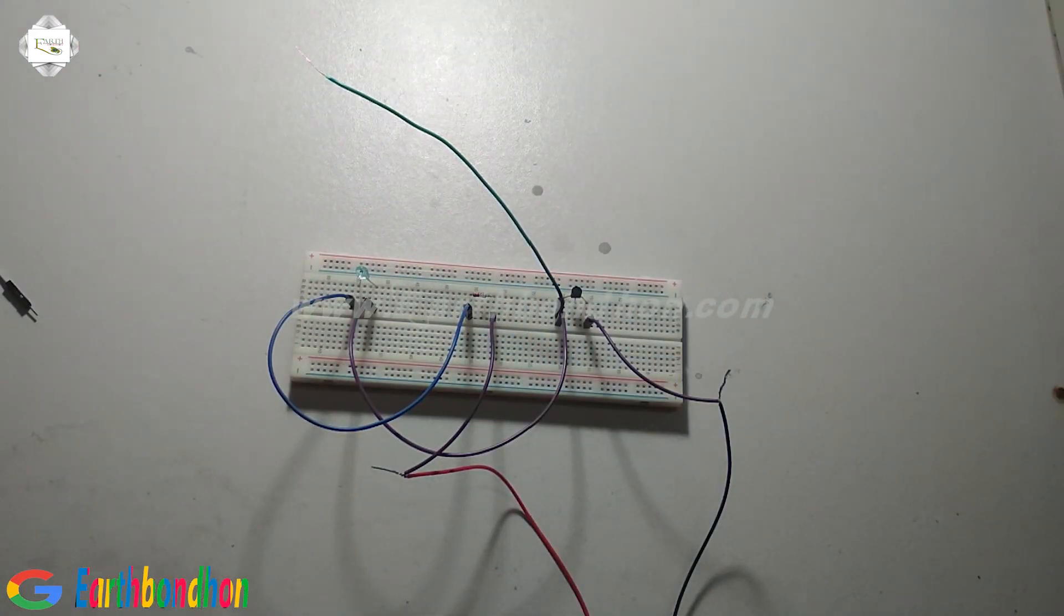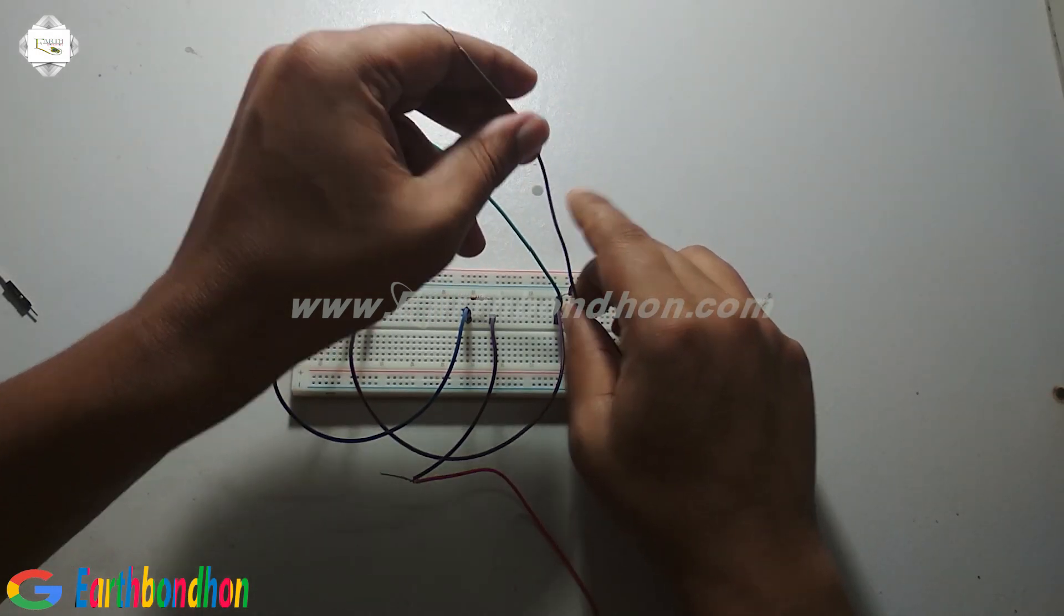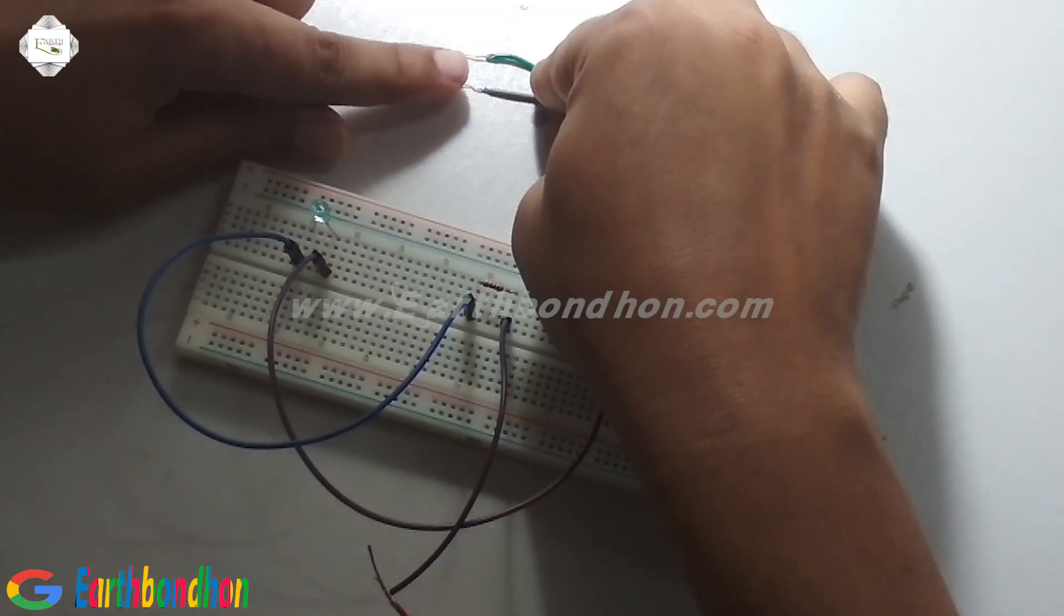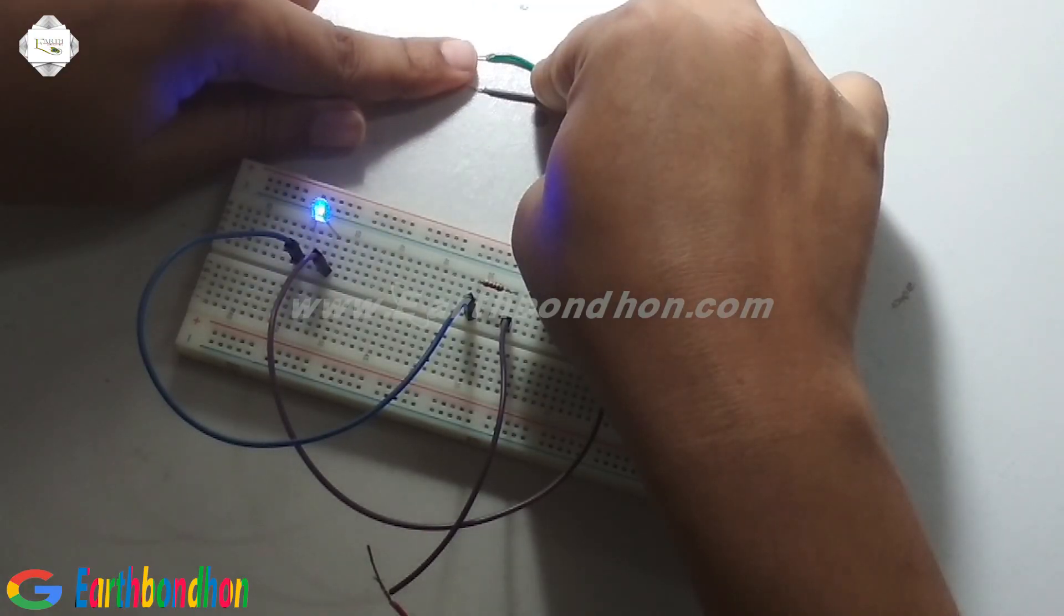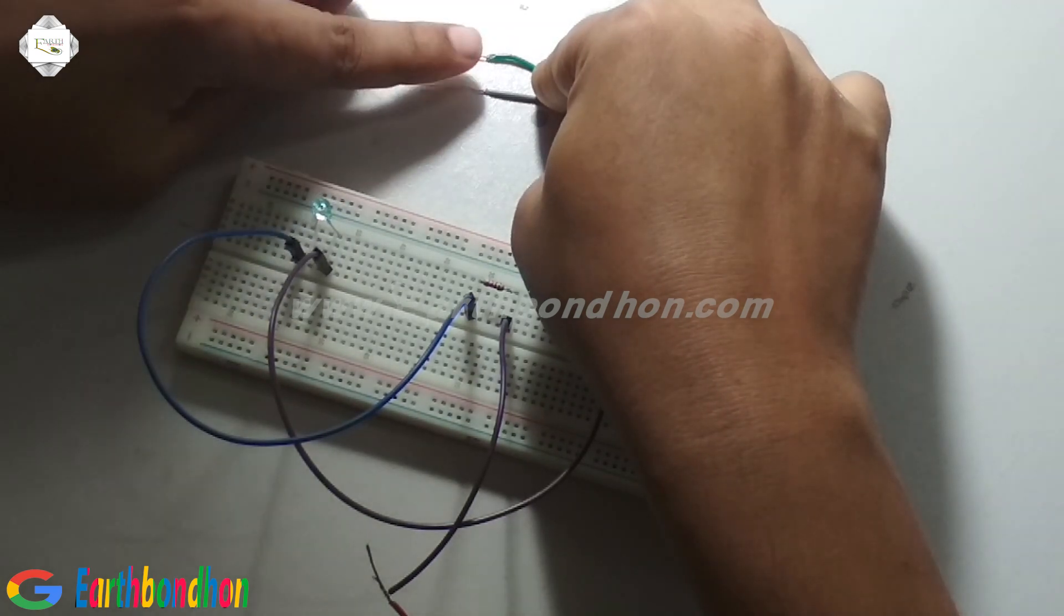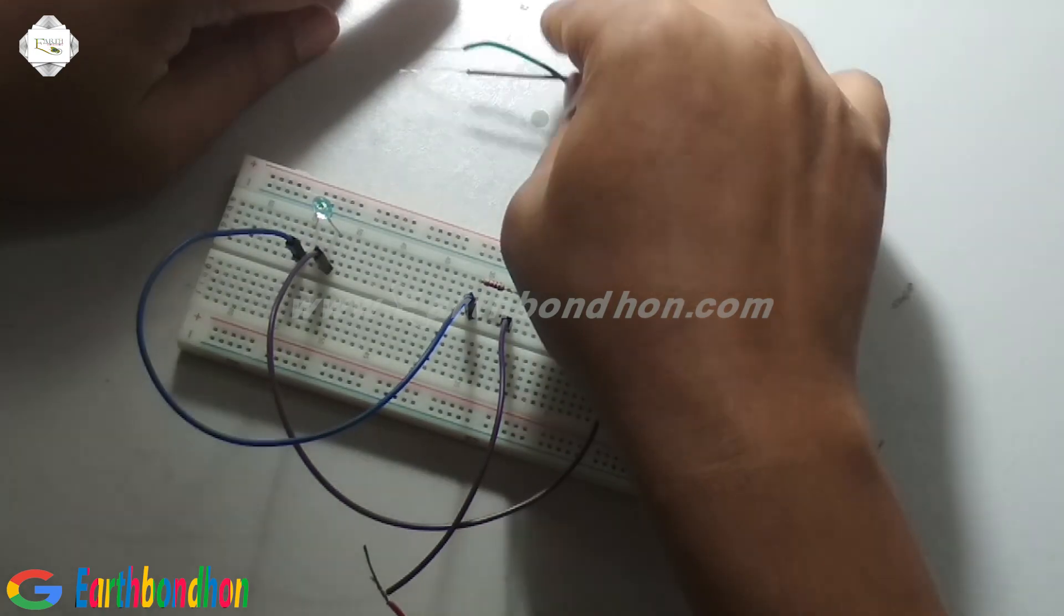And base, the middle terminal is base. TASC the output. LED is on, and remove LED is off. It is a condition and is AC. Thanks for listening.